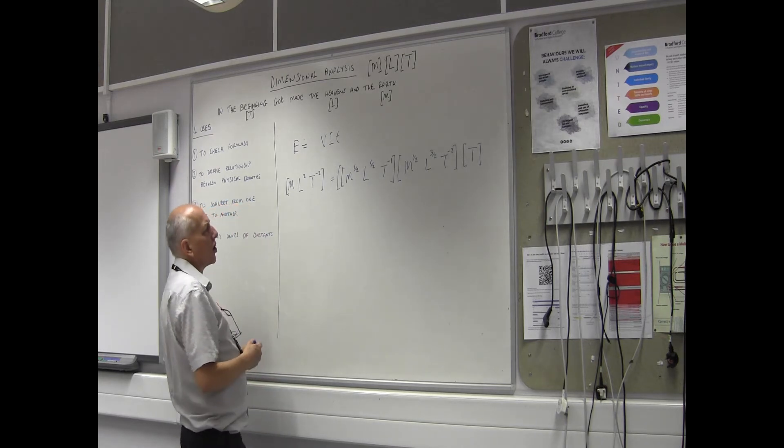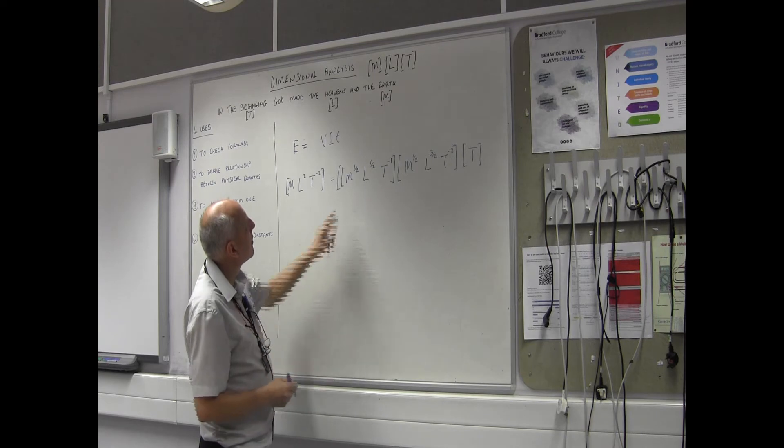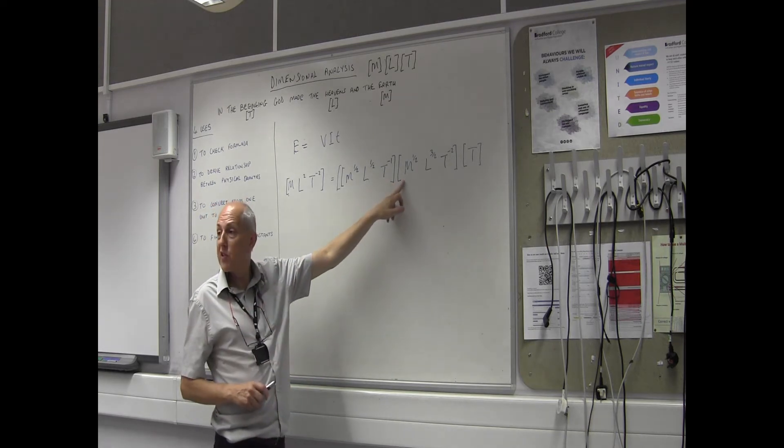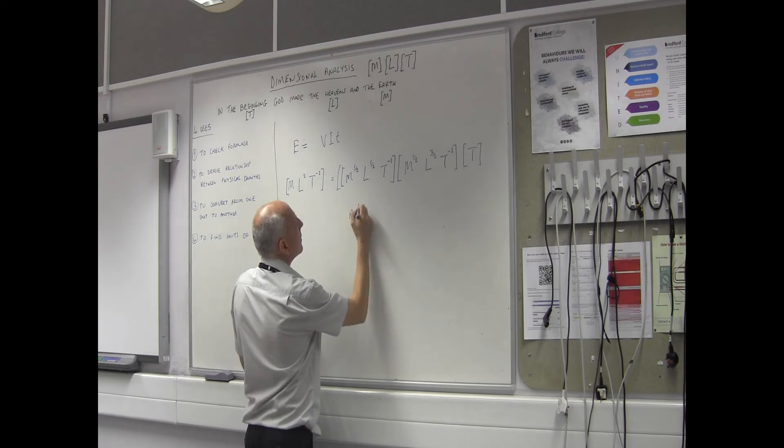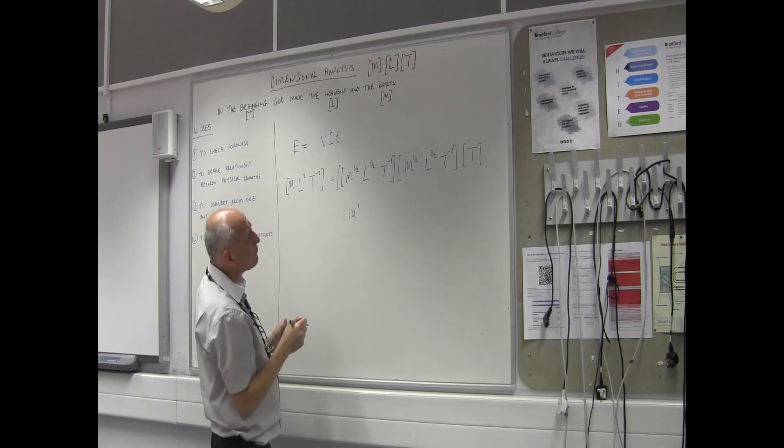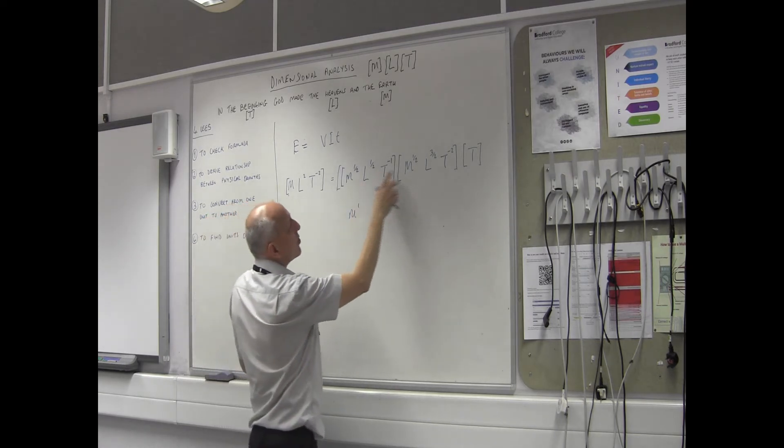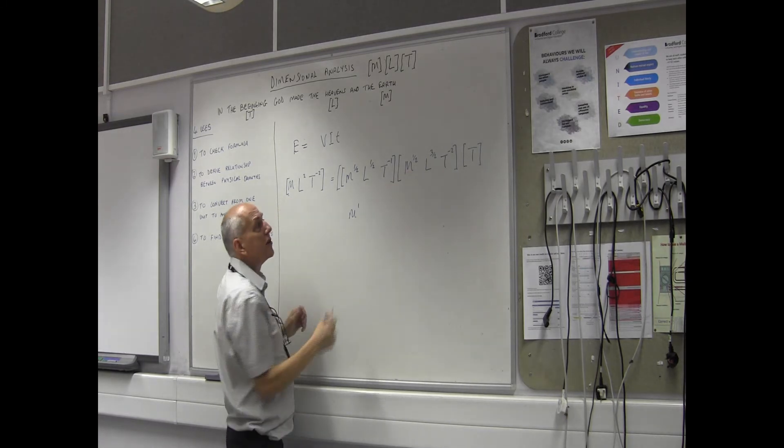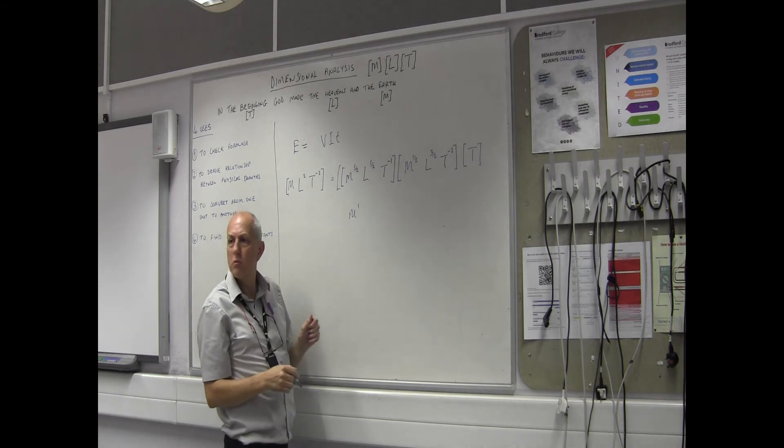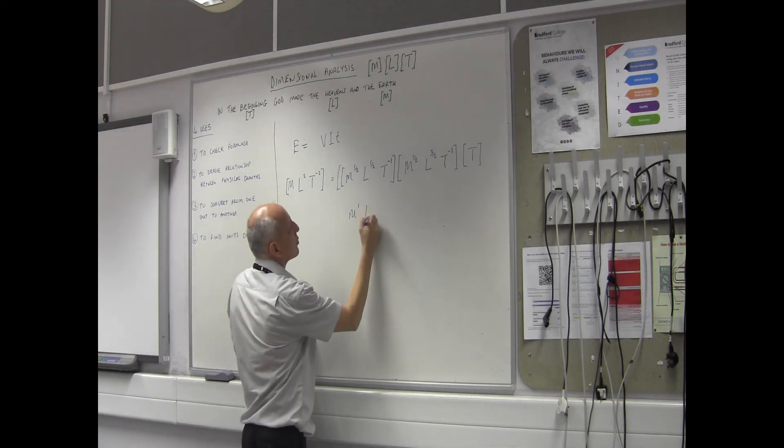Right, let's have a look. So if I multiply that into that, I add my indices together. So I'm going to get M to the 1. And actually write this in. And if I do the same with that, I'm going to get that added together with that. So it's going to be four halves. That's two. That's L to the two.